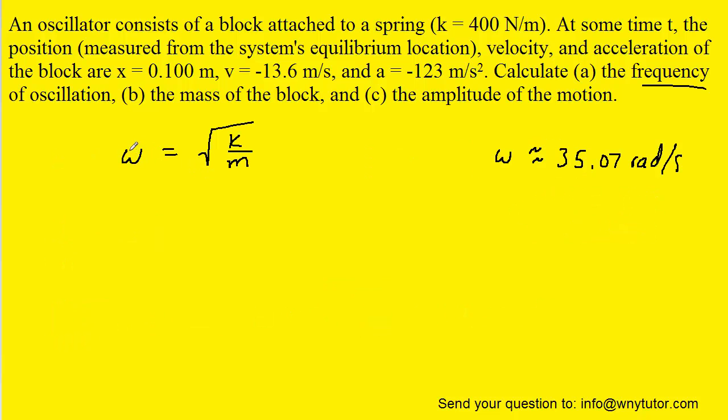We next examine the following relationship between angular velocity, the spring constant k, and the mass of the oscillator. And since we're looking to solve for the mass, we can actually square both sides of this equation, then multiply both sides by the mass m, and then divide by omega squared.